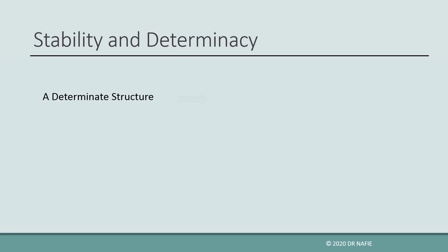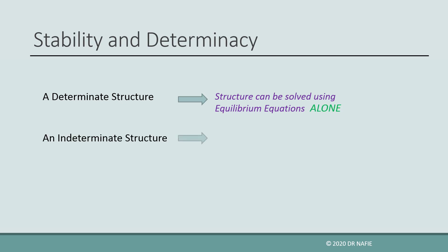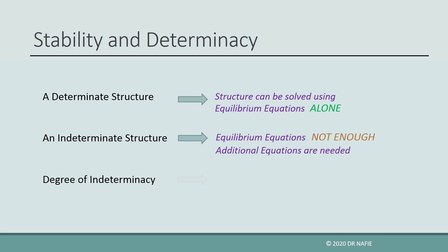What is a determinate structure? If the structure can be solved using the equilibrium equations alone, then the structure is determinate. But if the equilibrium equations are not enough and additional equations are needed, then the structure is indeterminate. The degree of indeterminacy is equal to the number of additional equations needed to solve the structure.